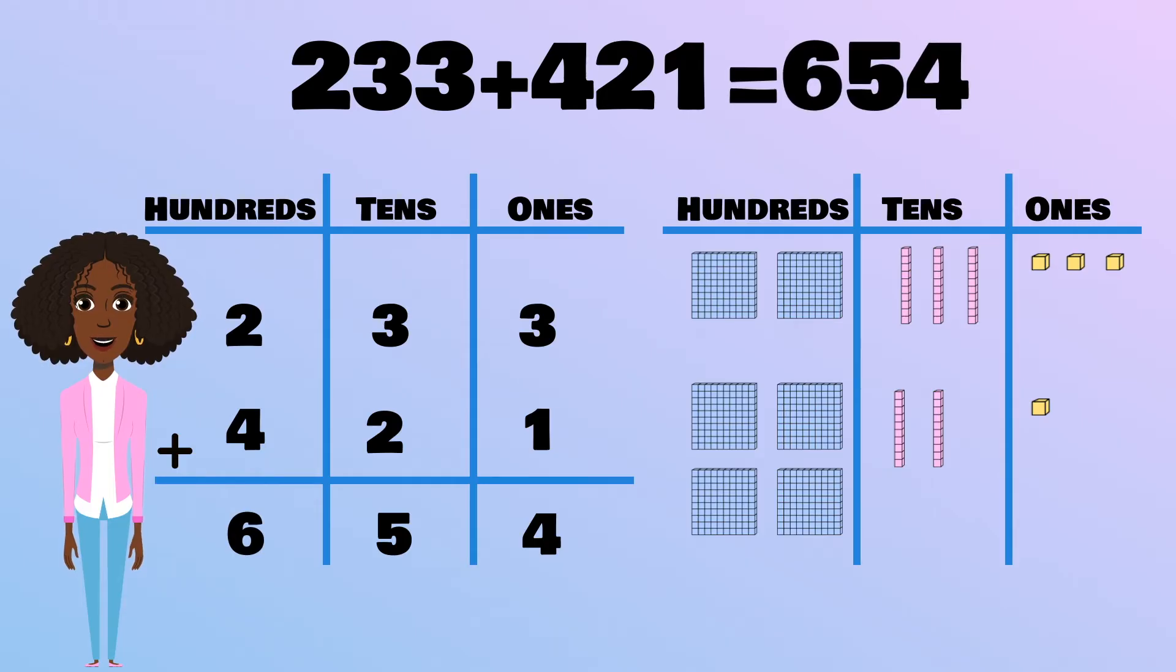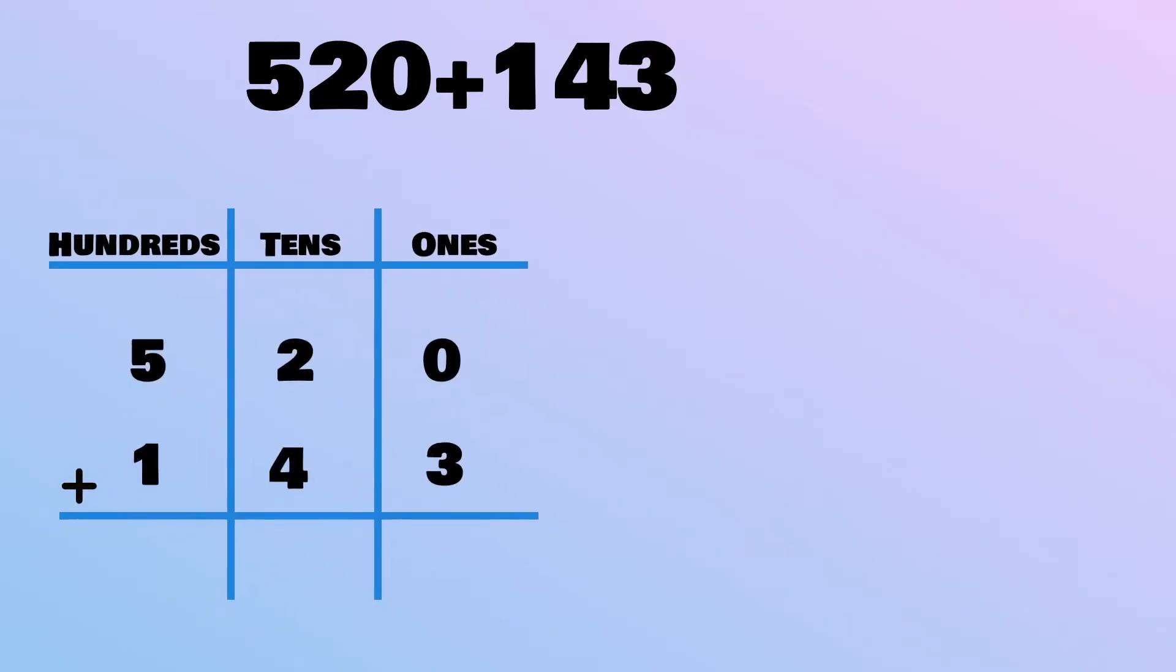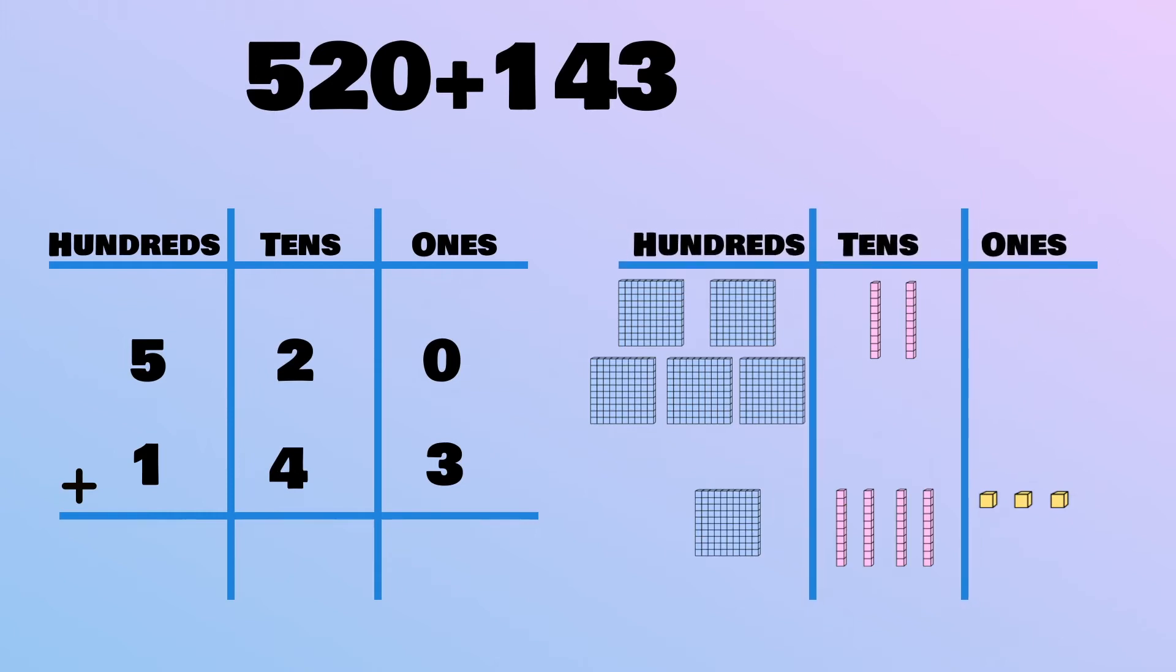Now, that's not so tricky, is it? Let's try some together. The next equation is 520 plus 143. Let's line these numbers up in a place value chart and model them with base 10 blocks. Remember, we always start by adding the ones place together.